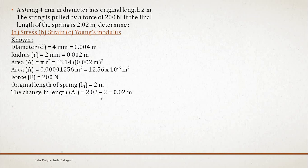Change in length is observed as 2.02. They said if the final length of the spring is 2.02 meters after pulling, so what is the change that took place in the original length? The final length is 2.02 minus 2, this 2 is the original length. When you subtract original length from final length, you get the extension. It is 0.02 meters extension.